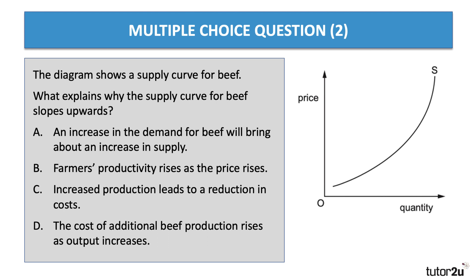Question two: the diagram shows a supply curve for beef. What explains why the supply curve for beef is upward sloping? What explains why that supply curve is non-linear — it's becoming steeper, more inelastic? Have a go at question number two.